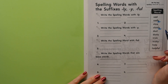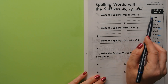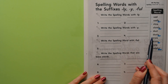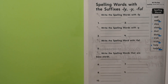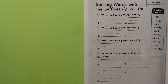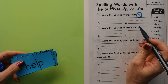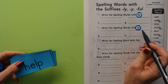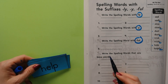We've got -ly, -y, and -ful. The rest of these are base words. So we have: sad, sadly, slow, slowly, dust, dusty, trick, tricky, help, helpful. We're going to sort them into words that have the suffix -ly, suffix -y, and suffix -ful, and then the base words down here.